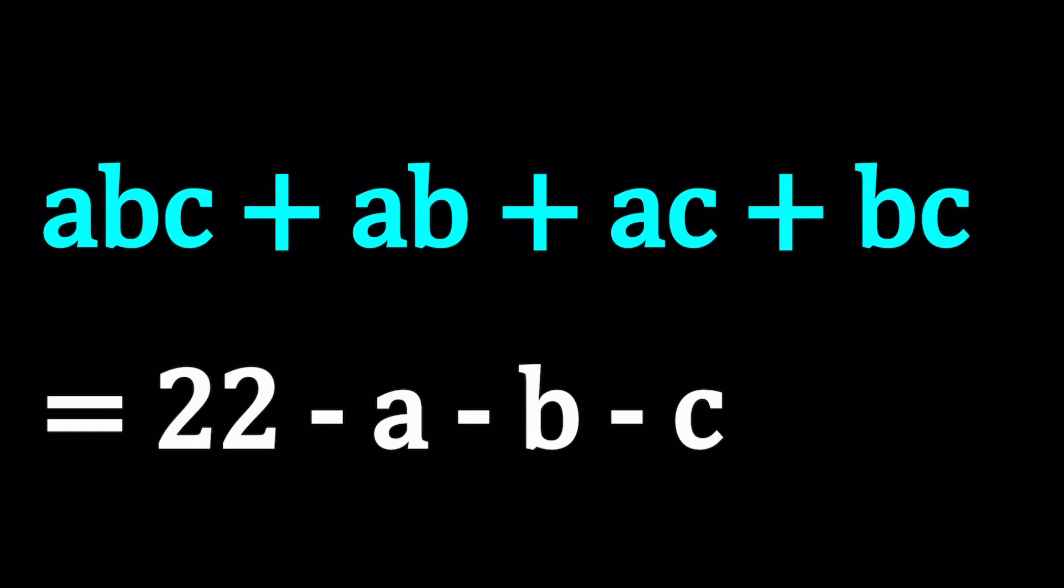Hello everyone. In this video we're going to be solving an interesting Diophantine equation. In other words, an equation with integer solutions. So a, b, c are integers and we have abc + ab + ac + bc equals 22 - a - b - c. We're going to be solving for a, b and c values.